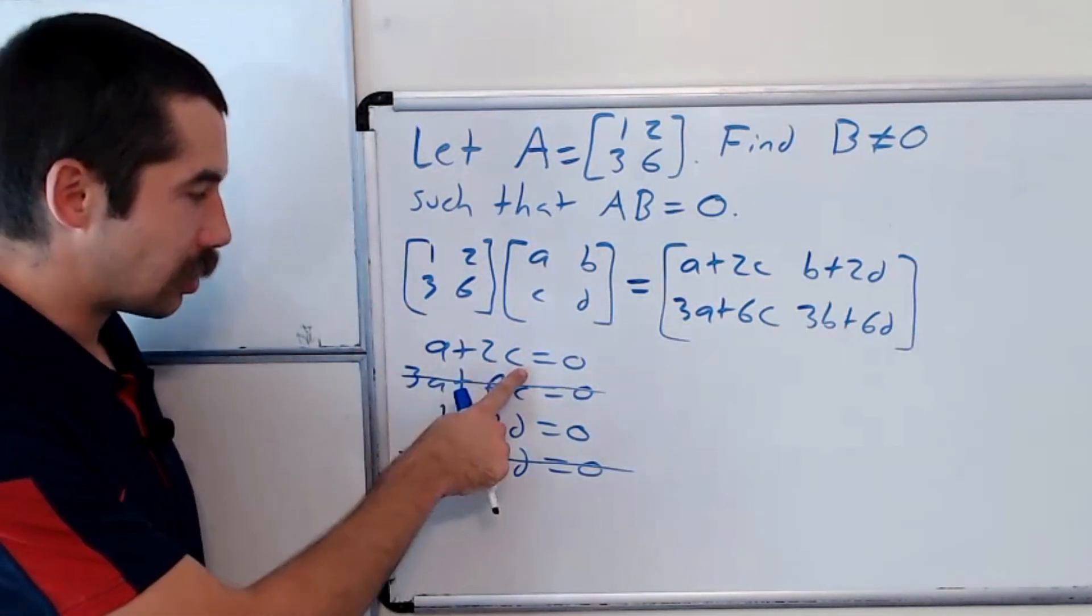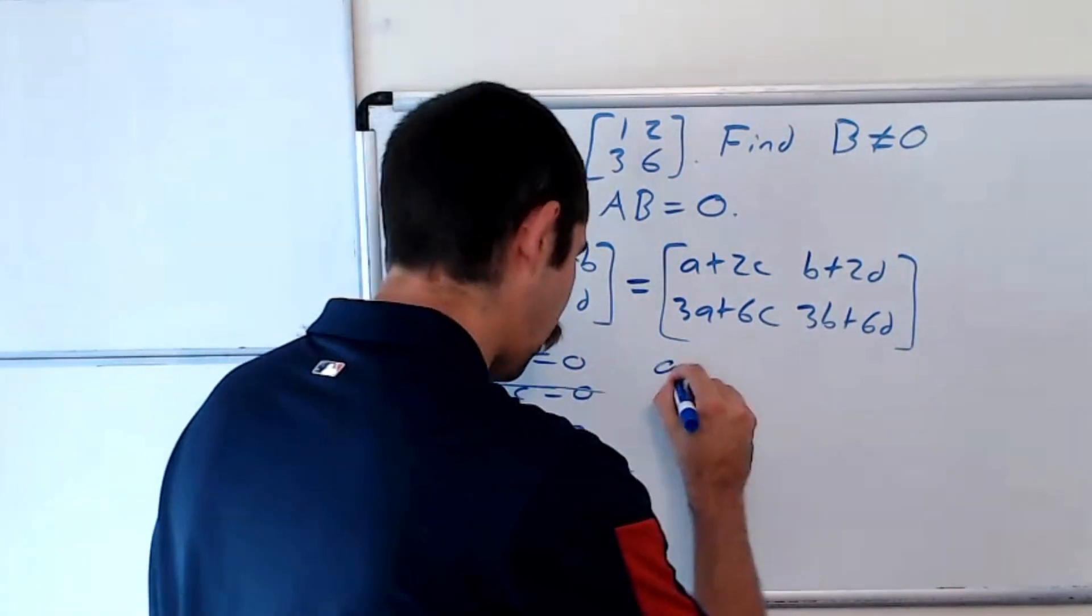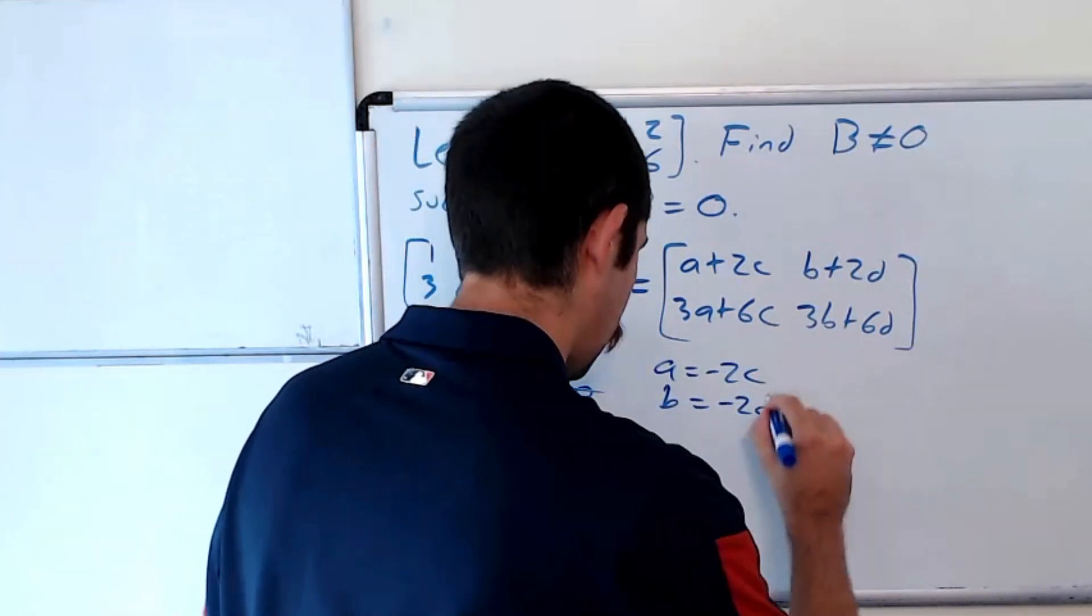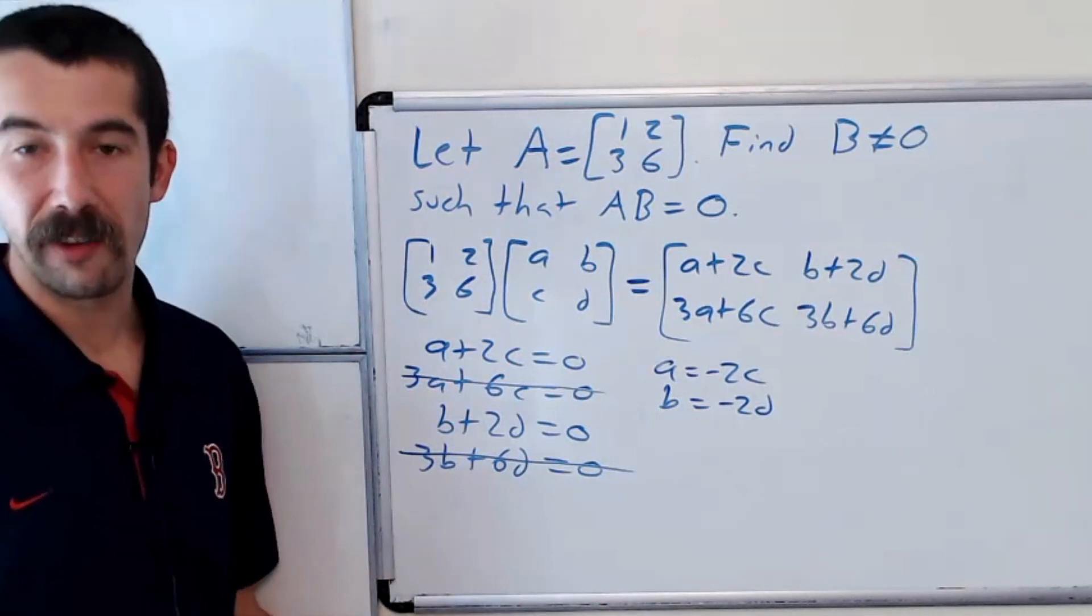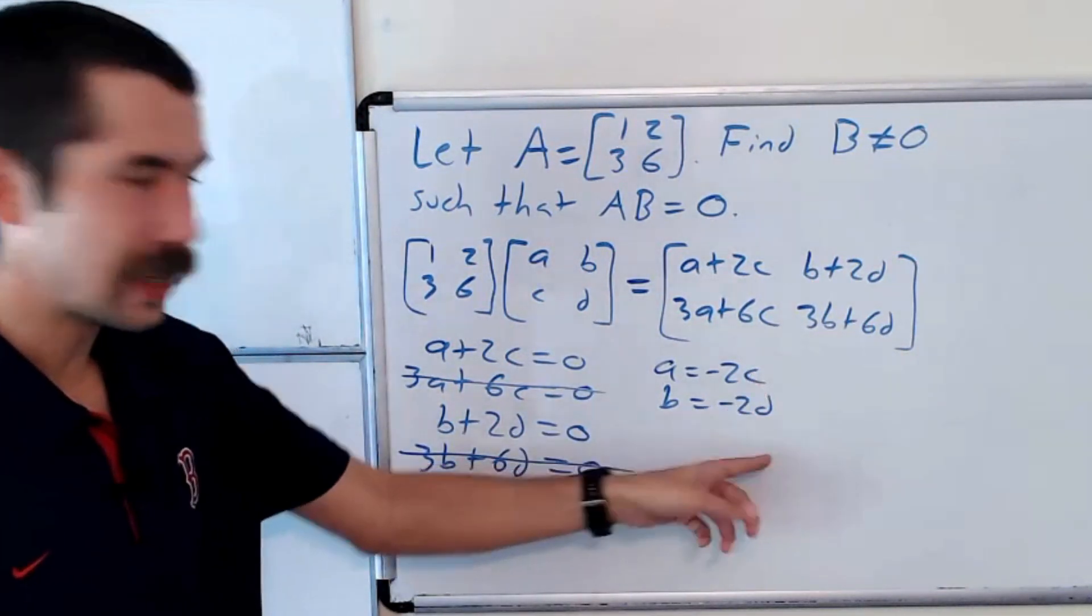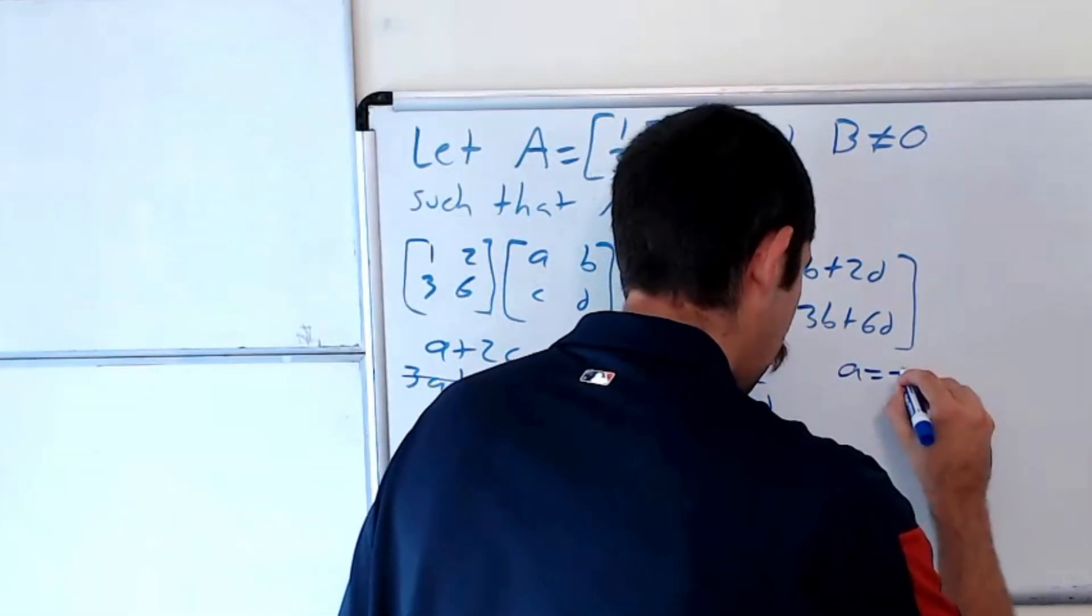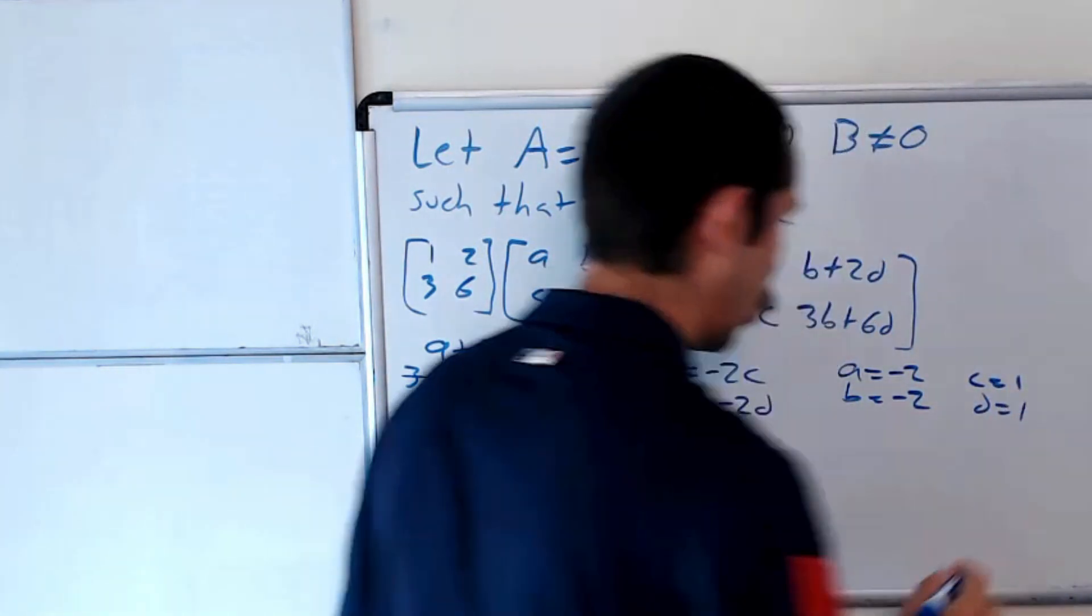So let's just get a in terms of c and b in terms of d. So we have a is equal to negative 2c and b is equal to negative 2d. And then we could pick our favorite values for c and d. So we could pick c and d both to be 1. So that gives us a is equal to negative 2, b is equal to negative 2, c is equal to 1, and d is equal to 1.